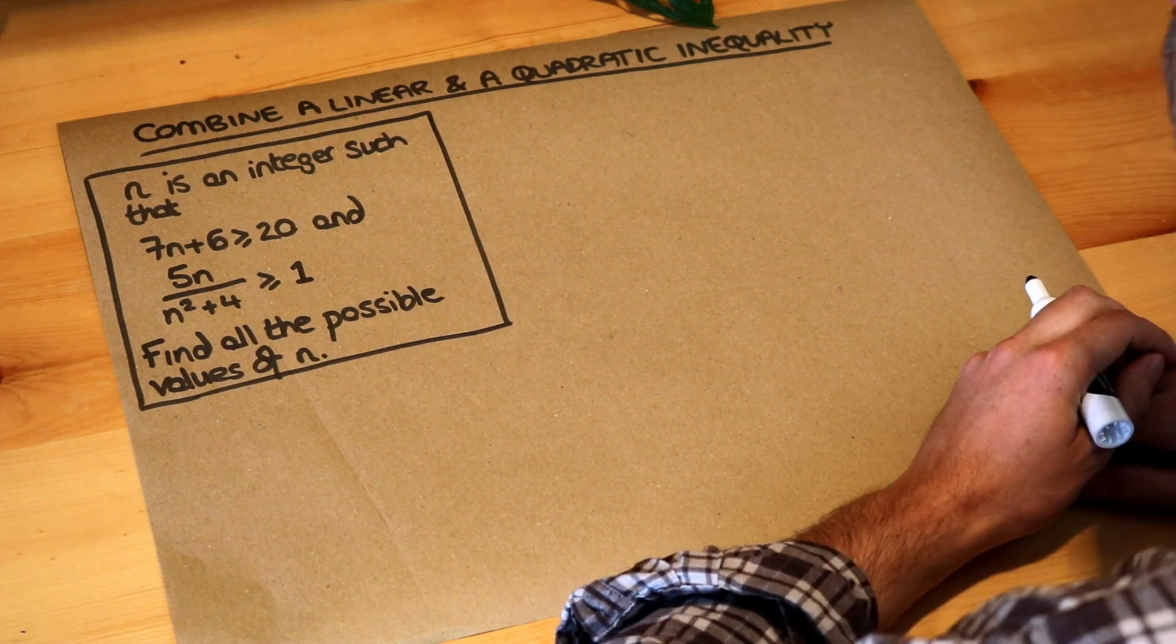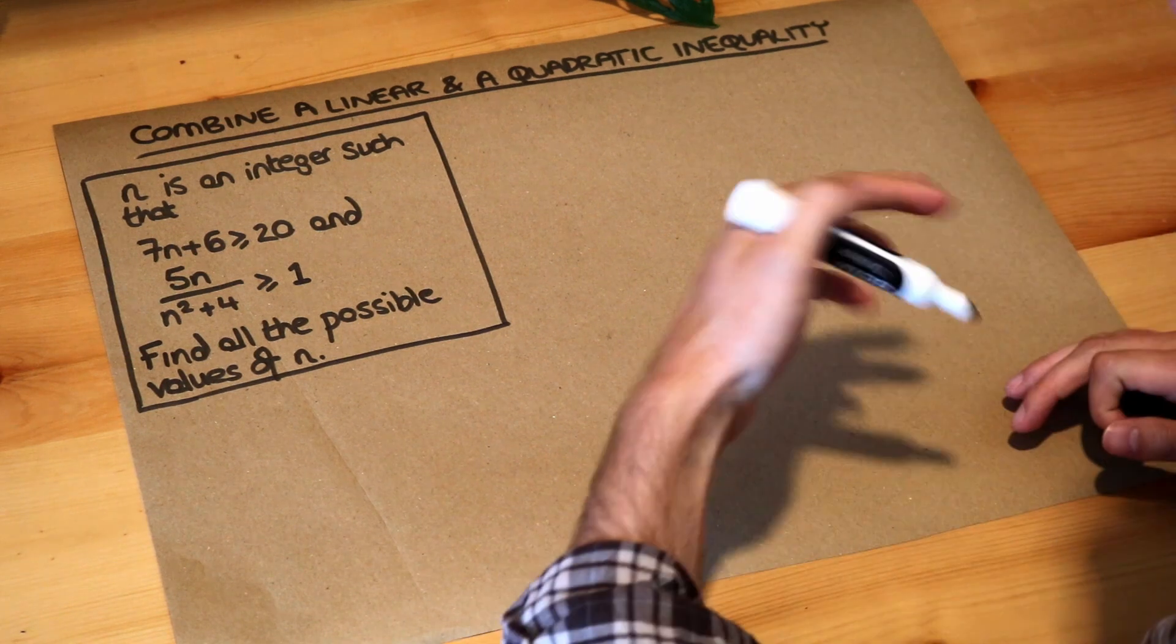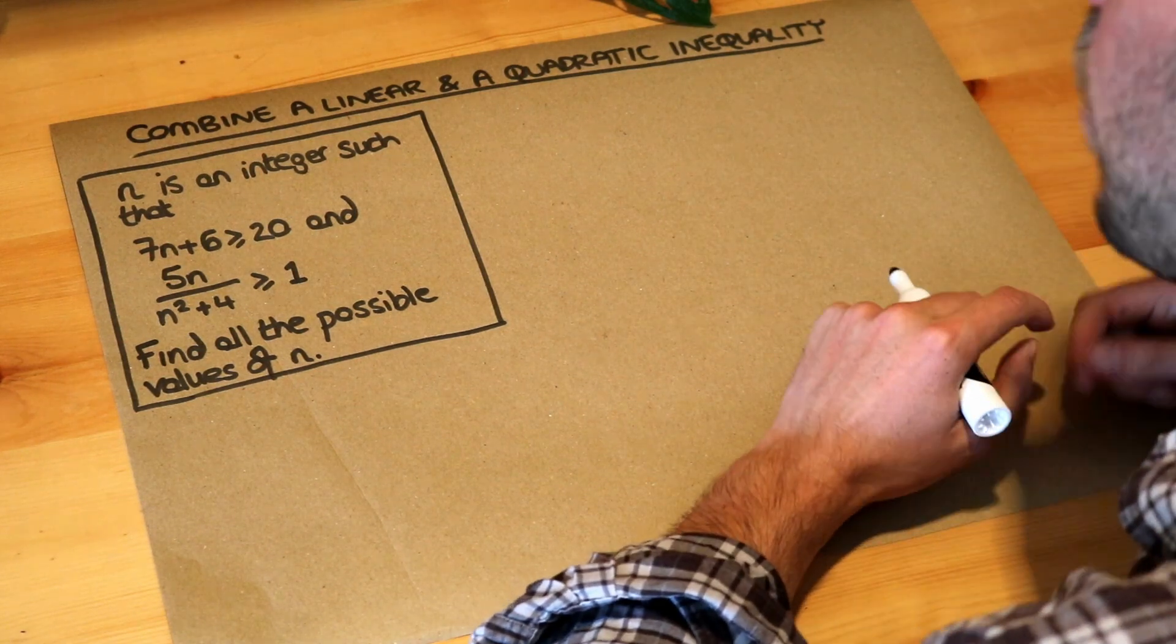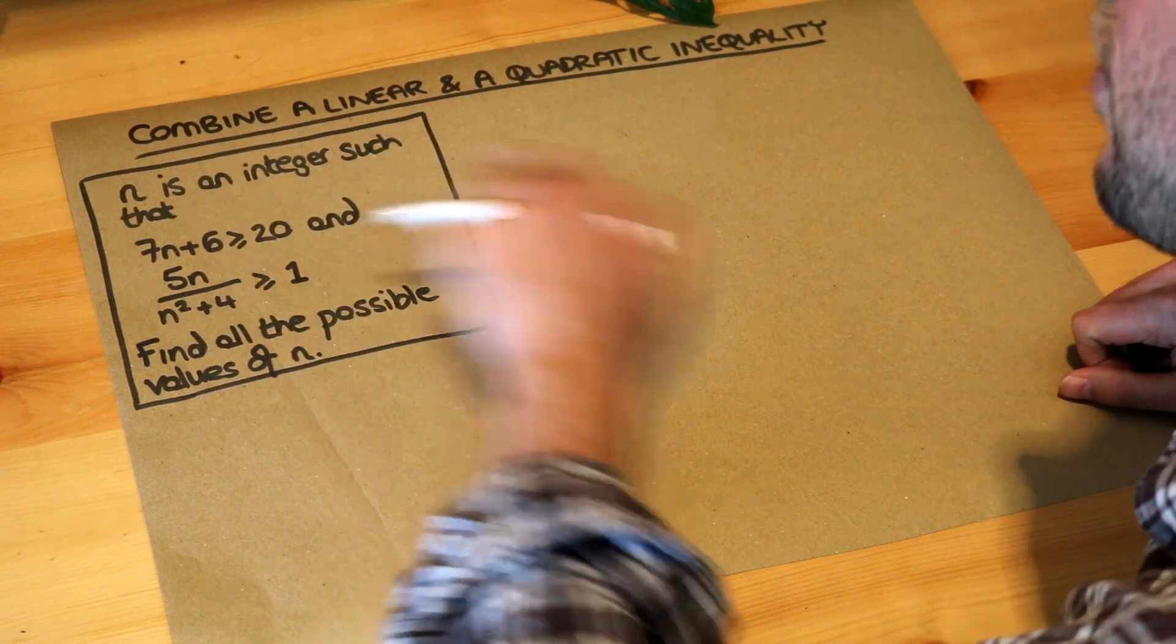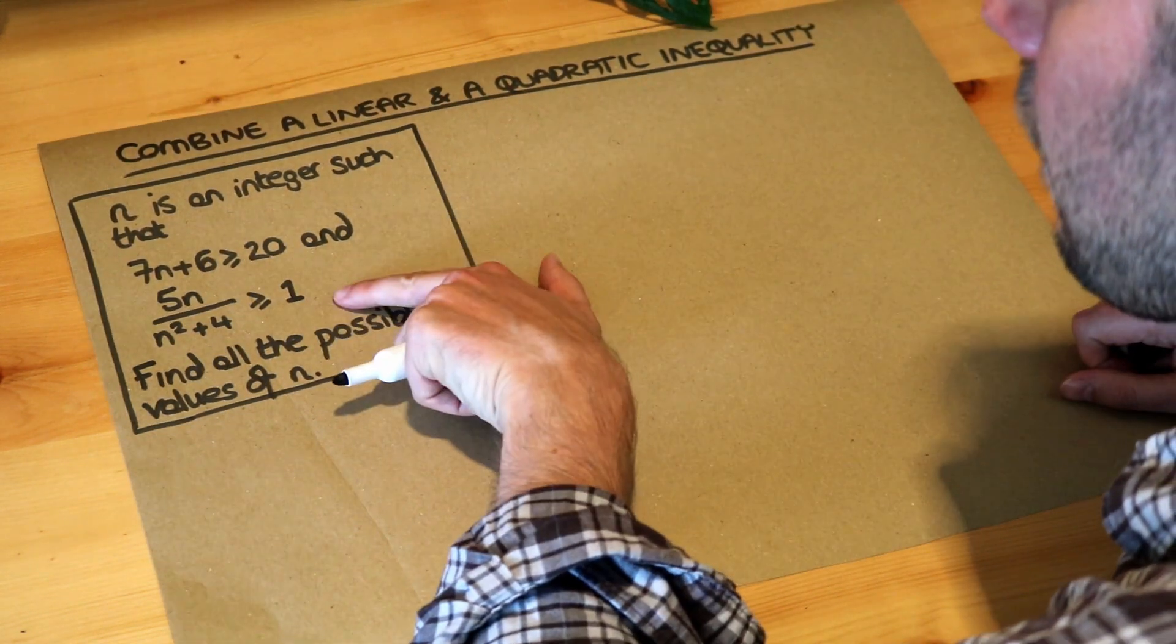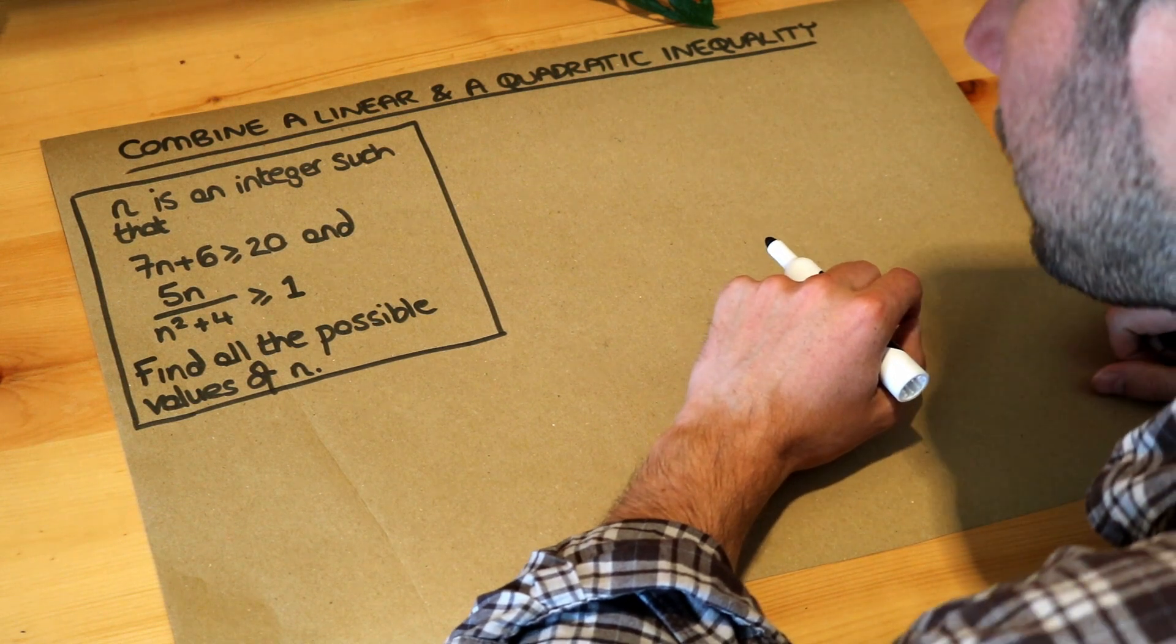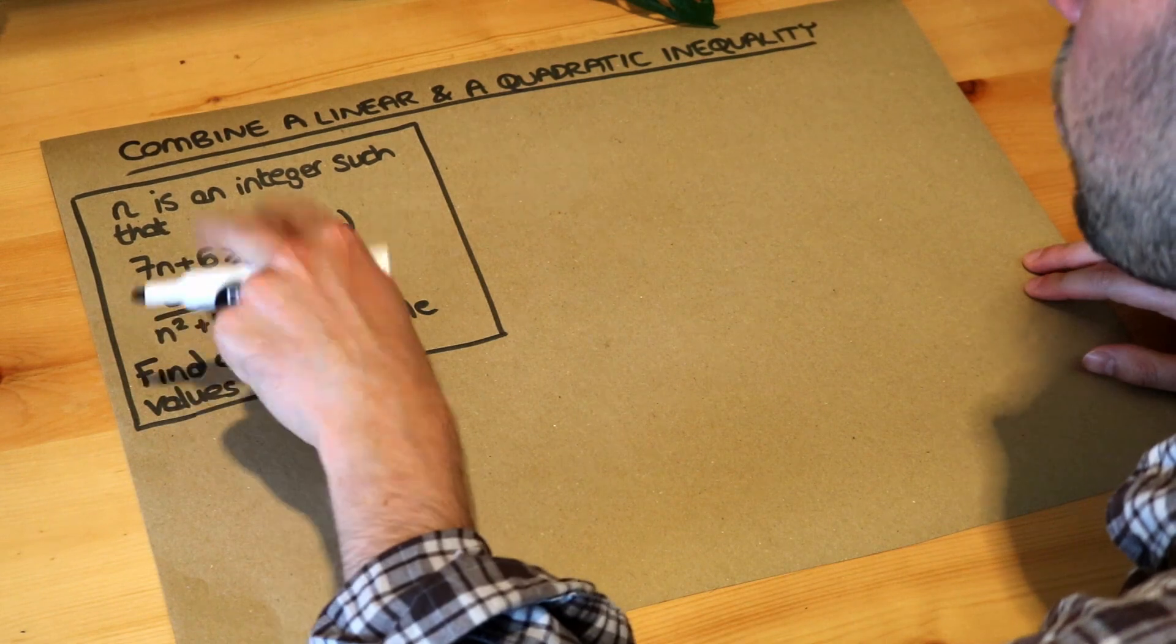Hello and welcome to this Dr. Frost video on combining a linear and a quadratic inequality. This is the culmination, the end of all the stuff you've been learning on quadratic inequality. So this is quite hard. Let's read the question. N is an integer, that's a whole number, such that 7n+6 is greater than or equal to 20 and 5n/(n²+4) is greater than or equal to 1. Find all the possible values of n.